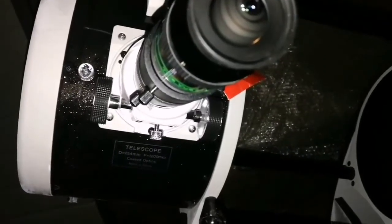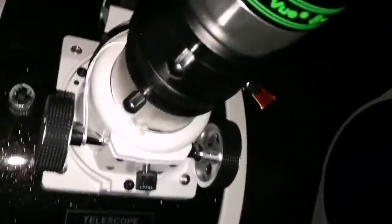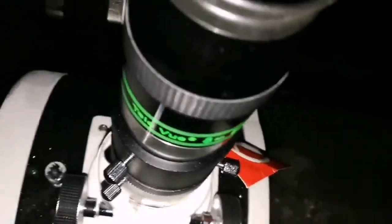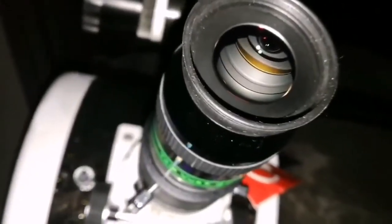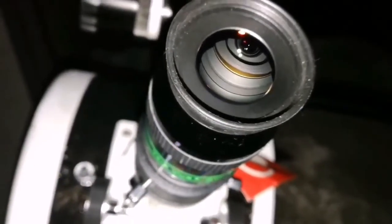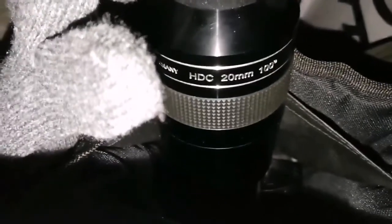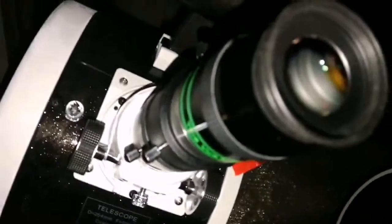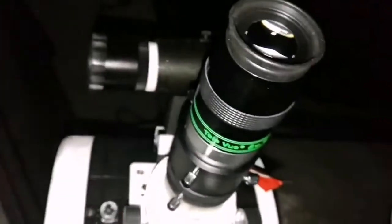The Sky Watcher Flex Tube 250P Dobsonian reflector. I'm using the TeleVue Ethos 8mm and I can see so many details and really enjoying it. I used previously the HTC APM 20 millimeter, 100 degree. These are 100 degree eyepieces, really amazing views.